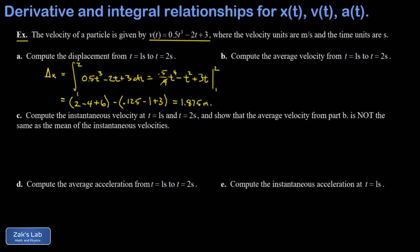In part b, we're asked to compute the average velocity from t equals one to t equals two seconds. Average velocity is the total displacement divided by how long it took. We already found the displacement is positive 1.875 meters, and delta t is one second. So average velocity is 1.875 meters per second.